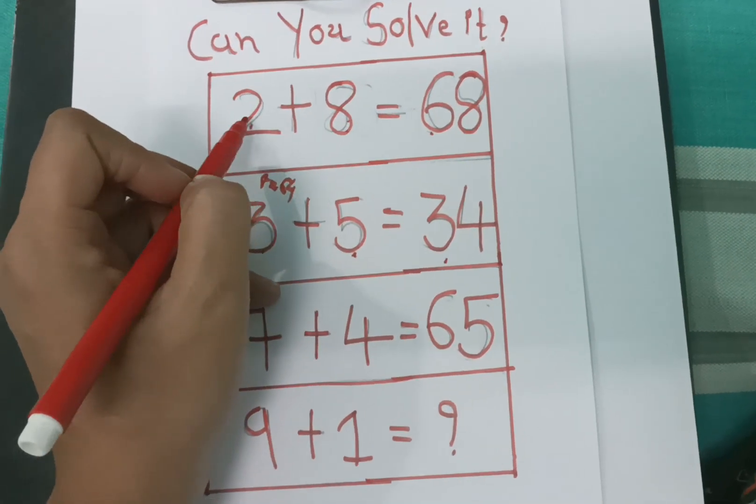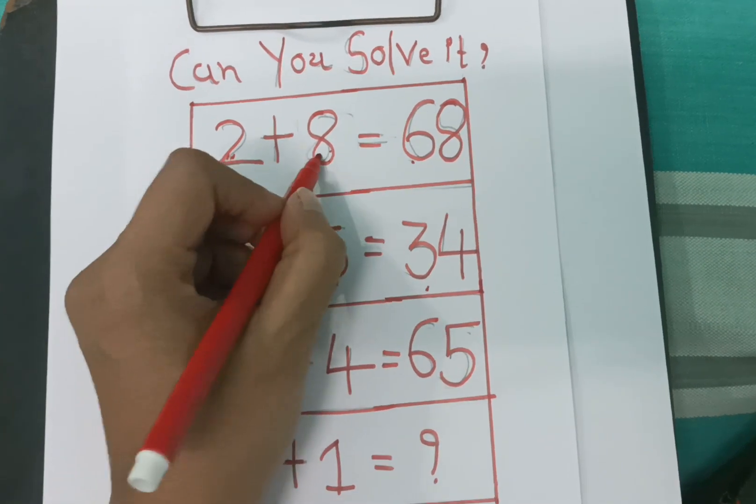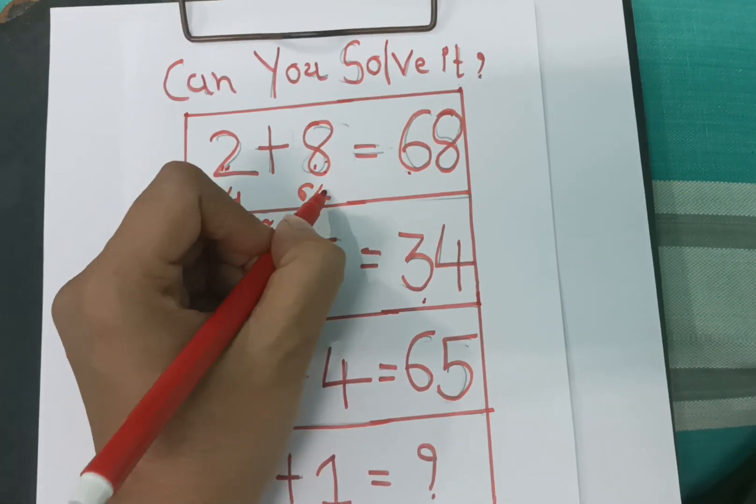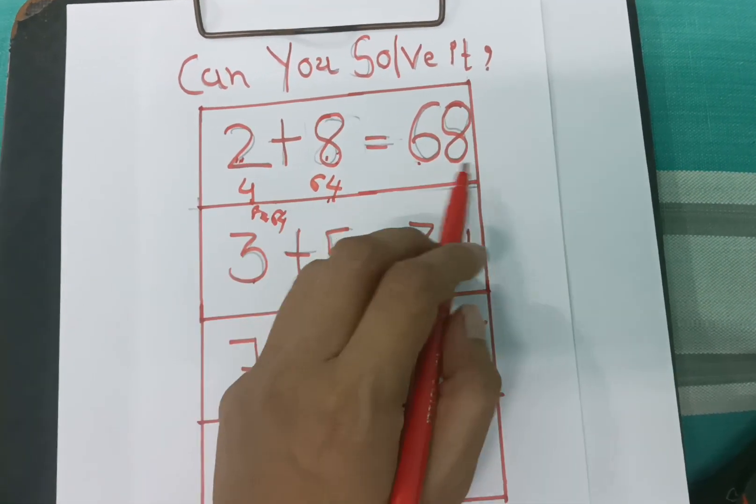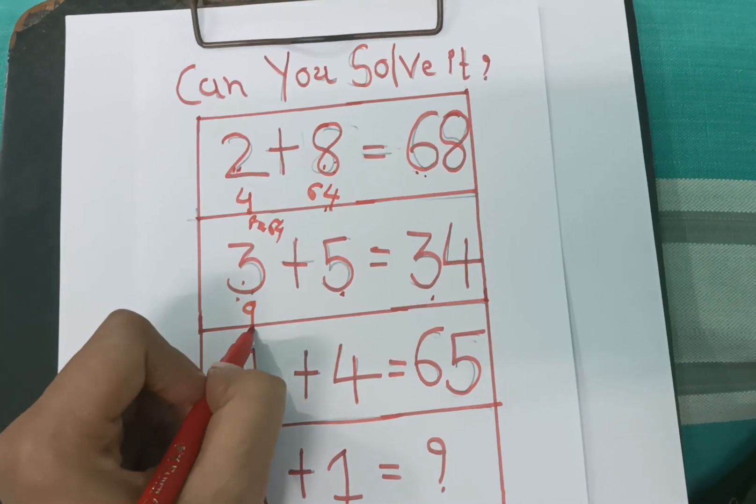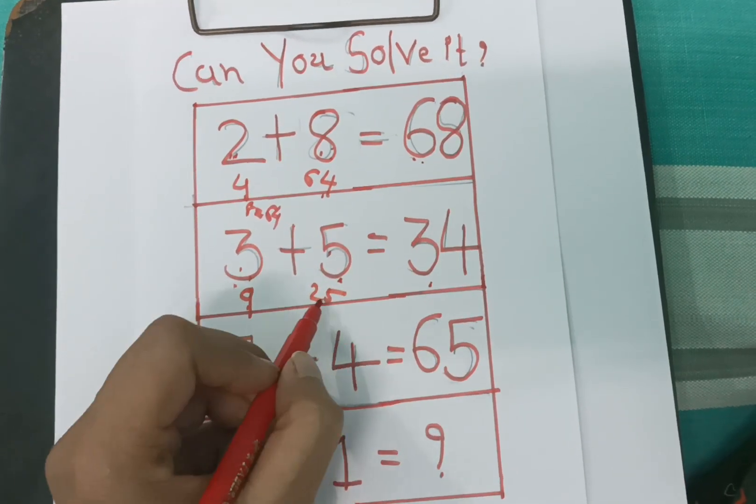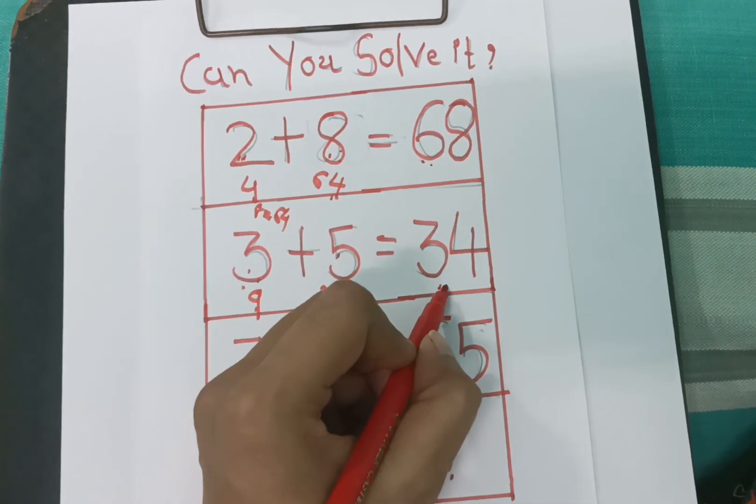So if we square 2, 2 square is 4, and 8 square is 64. 4 plus 64 is equal to 68. Here 3 square is 9, 5 square is 25, and 9 plus 25 is equal to 34.